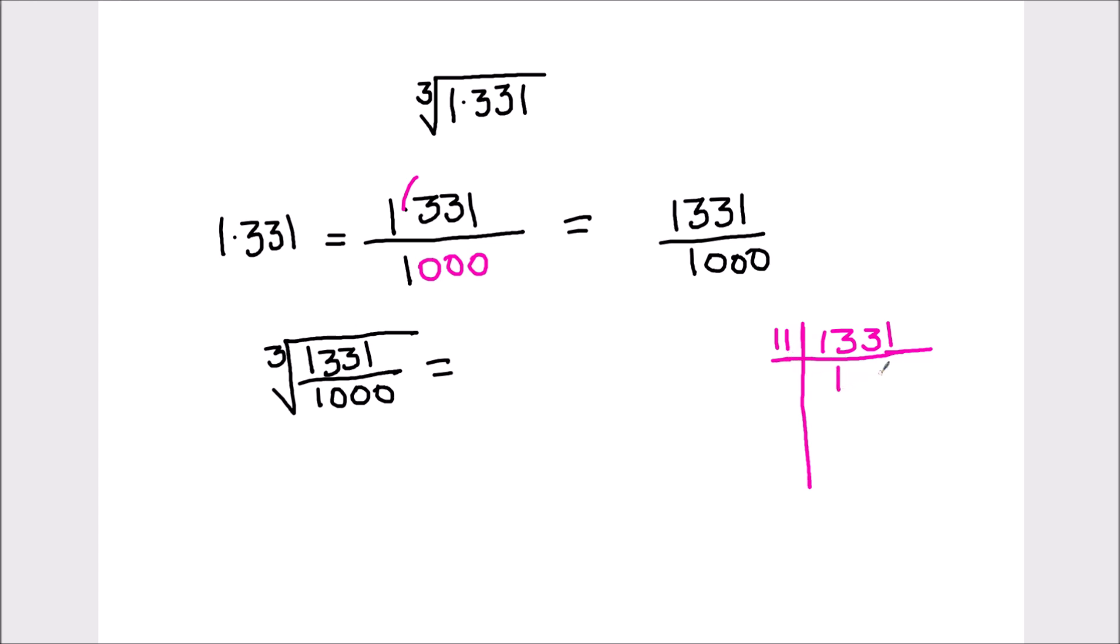11 times 1 is 11. Then here we have 2 remainder. This becomes 23. 11 times 2 is 22. Then 1 is remainder. This becomes 11. 11 times 1 is 11. Now we are going to divide 121 by 11 again. 11 times 1 is 11. So we got the factors of 1331 as 11 times 11 times 11.